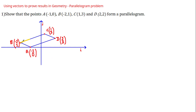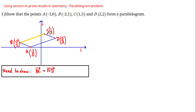We can do this by showing that the vector BC is equal to the vector AD. This would prove they're parallel, because two vectors are parallel when one is a scalar multiple of the other. If the vectors are equal, that scalar is one. This equation also proves they have the same length, since equal vectors have the same magnitude.